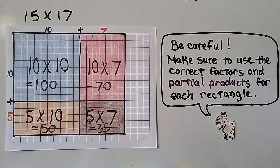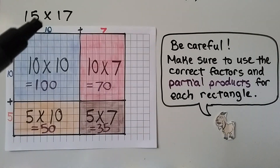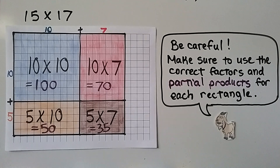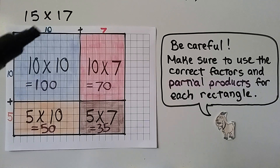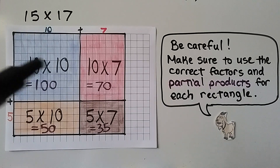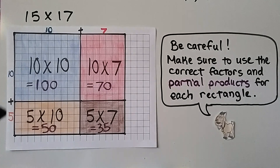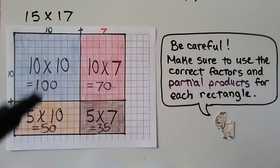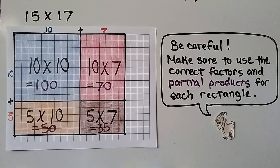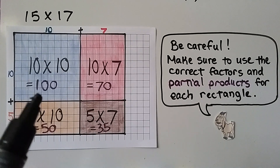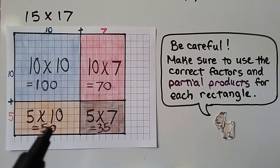Here we have 15 times 17. We broke the 15 into 10 plus 5 and the 17 into 10 plus 7. We have to be careful and make sure to use the correct factors and partial products for each rectangle: 10 times 10 is 100, 10 times 7 is 70, 5 times 10 is 50, and 5 times 7 is 35 for our partial products.